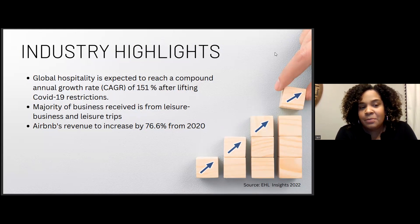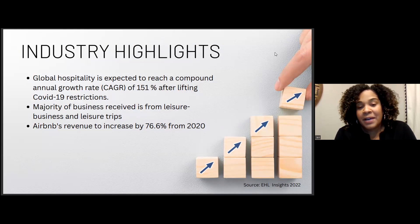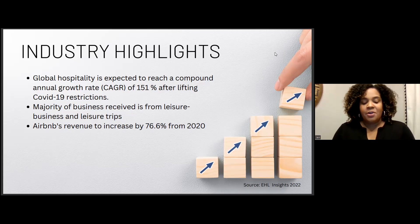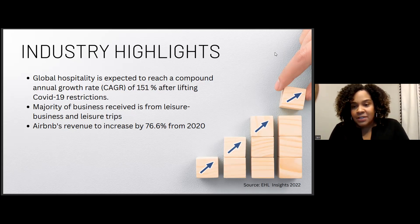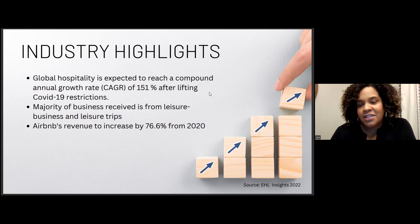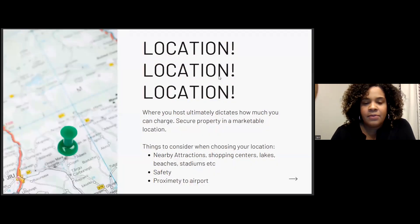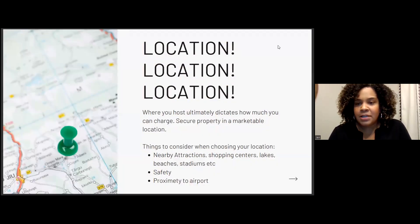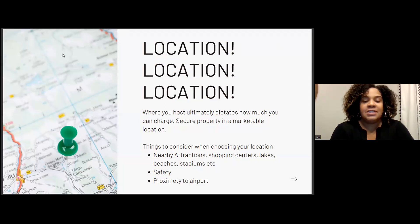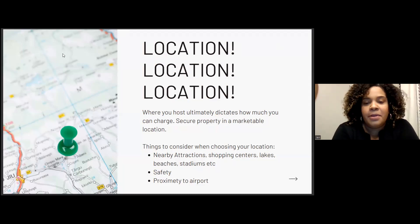The majority of business comes from leisure and business trips, and Airbnb's revenue is expected to increase by 76.6%. While there are some issues with Airbnb in Ontario, there are great options outside of here — Calgary, Jamaica, Dominican Republic — where you're seeing tremendous growth. Location is extremely important and is one of the first things you'll think about for a successful Airbnb or short-term rental.